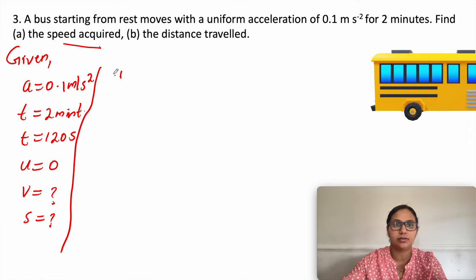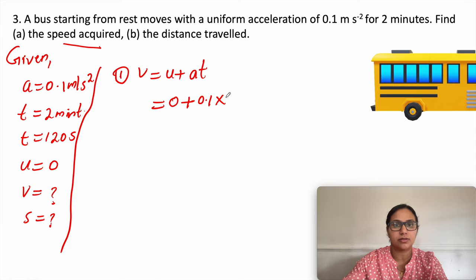Using v = u + at: v equals 0 plus 0.1 times 120 seconds, which gives 12 meter per second. That is the speed acquired.